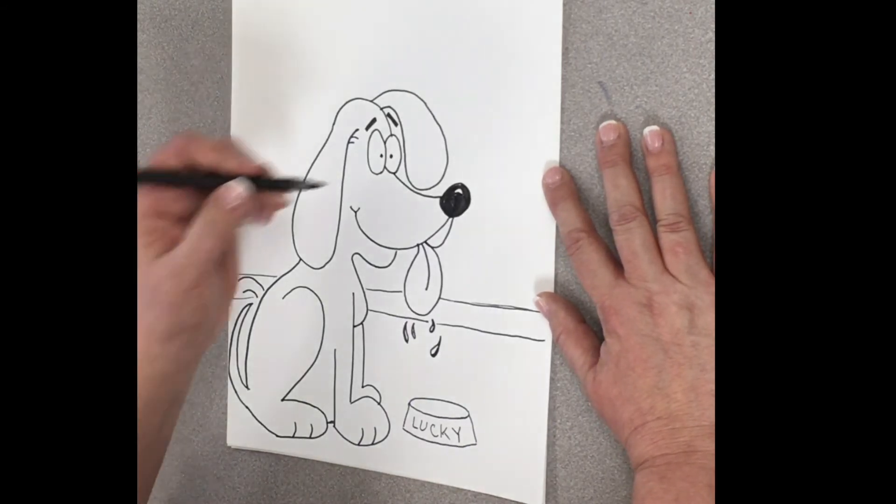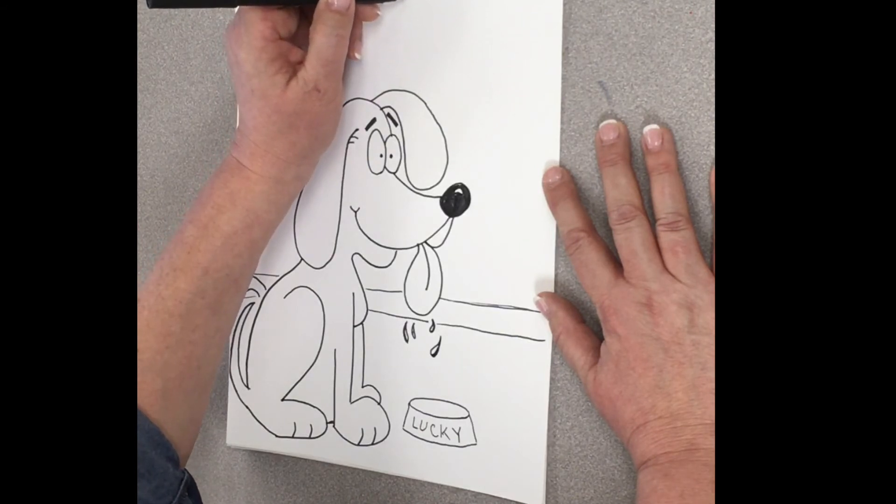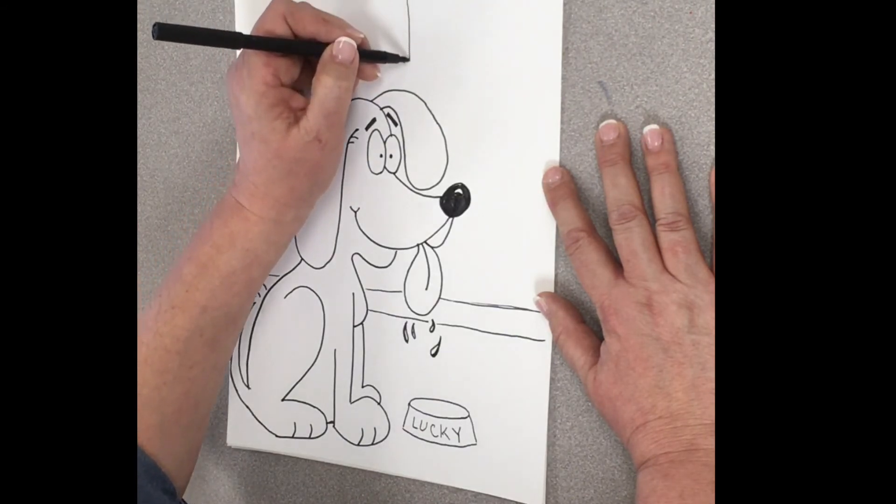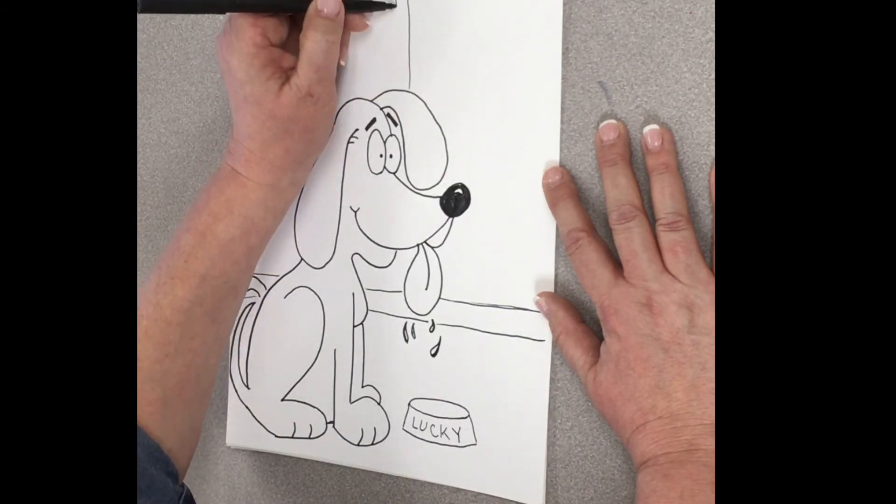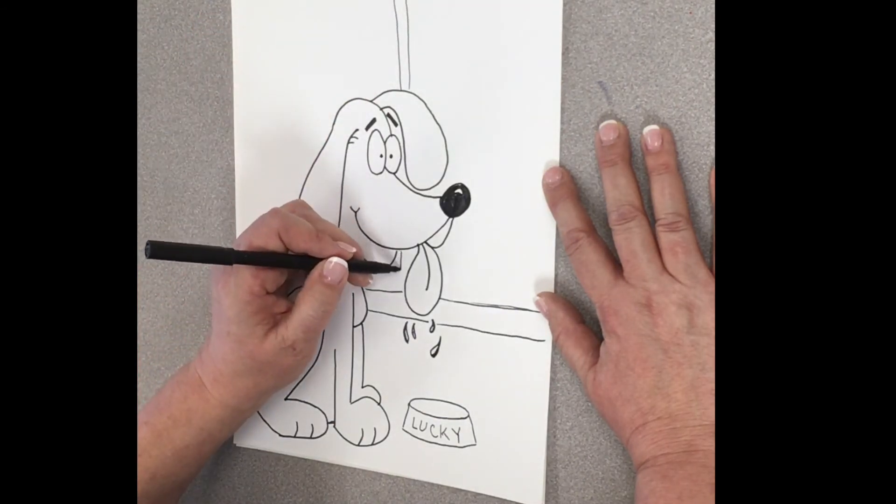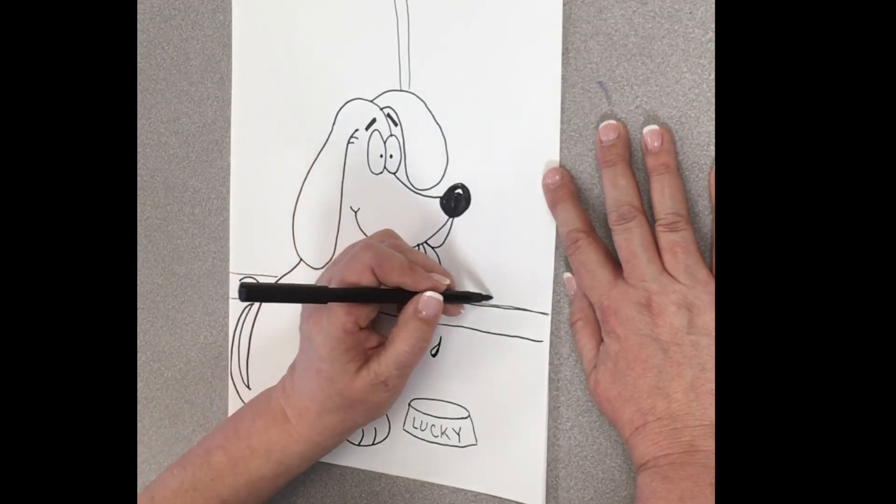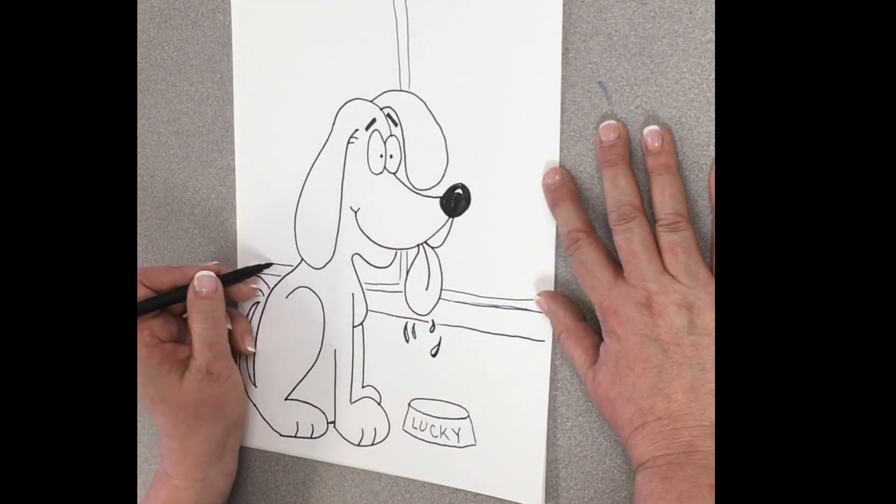Now, maybe, you know, you have something else. Okay. So, then maybe, maybe there's some cabinets behind him. All right. I'll just draw some doors, like to a cabinet.